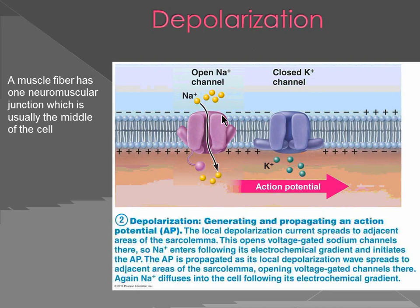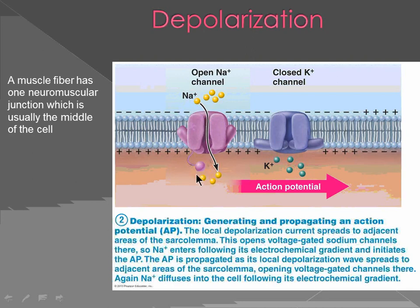Normally those channels are closed and sodium remains on the outside, potassium on the inside of the muscle cell. After the nerve impulse arrives, with acetylcholine binding to the receptors on the motor end plate, that changes the configuration of the muscle cell membrane — it opens the sodium channels. Sodium begins to go in; positive charges are now more on the inside. That is known as depolarization, which sets about an action potential.